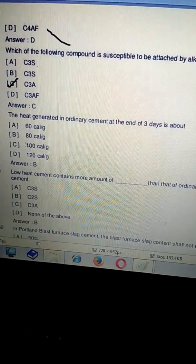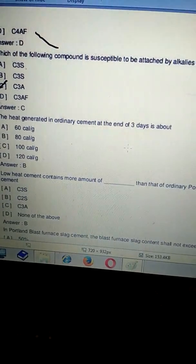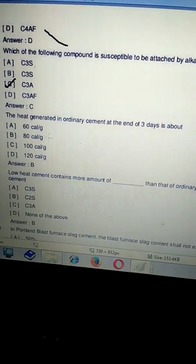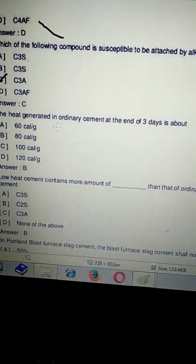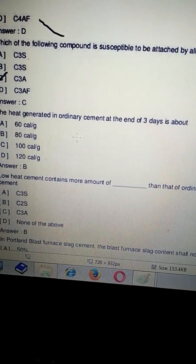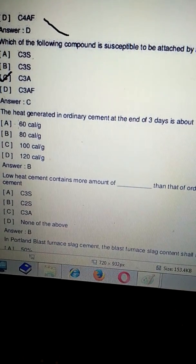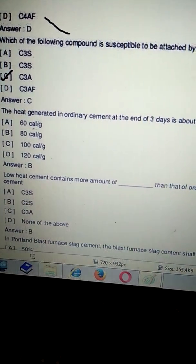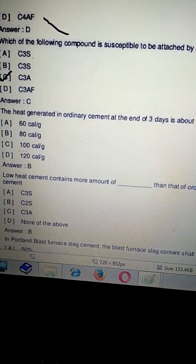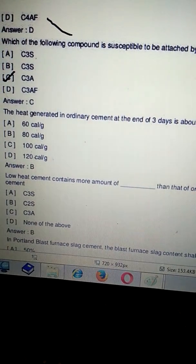Next question: the heat generated in ordinary cement at the end of three days is about - is it 60 calorie per gram, 80 calorie per gram, 100 calorie per gram, or 120 calorie per gram? The correct answer of this question is B, that is 80 calorie per gram.